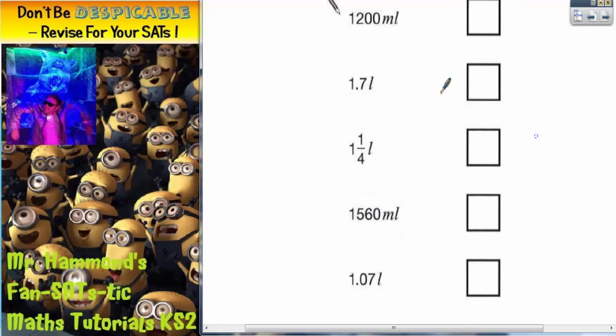Now, first thing to notice is that the five capacities are all in different formats. So these two are in millilitres and these three, including that bottom one there, are in litres.